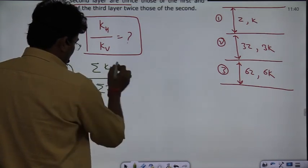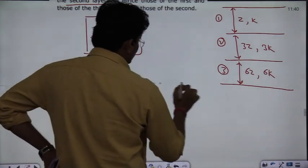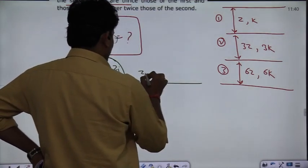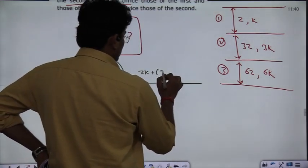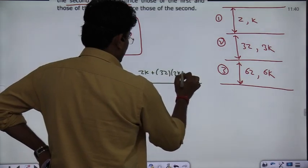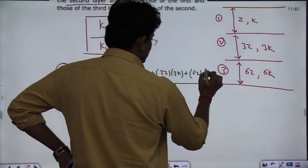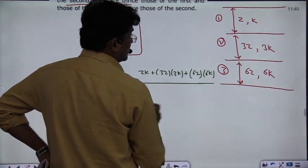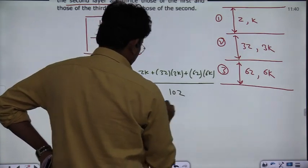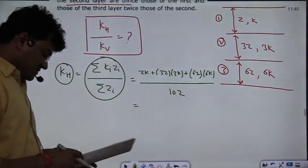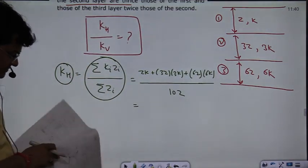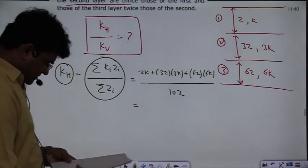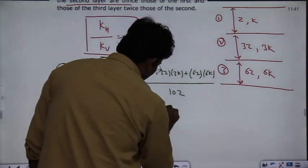This is equal to z times k plus 3z times 3k plus 6z times 6k, divided by total z. Total z equals z plus 3z plus 6z, which is 10z. This horizontal permeability is coming out to be 4.6k.